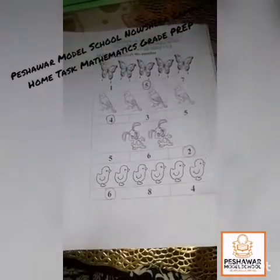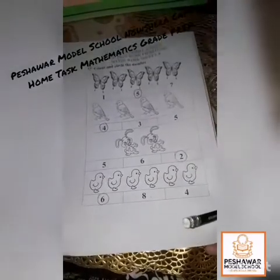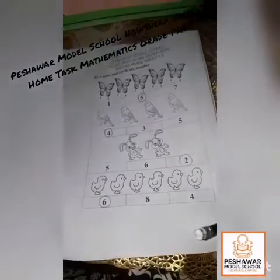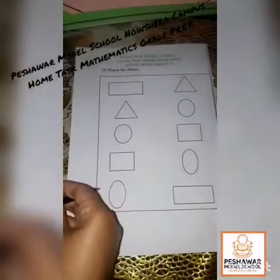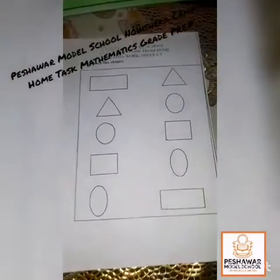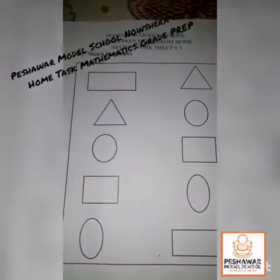Dear parents, you also have to do the worksheet with your children. Then 1, 2, 3 and 4. Now we will circle the number. Now we will move to worksheet number 5.